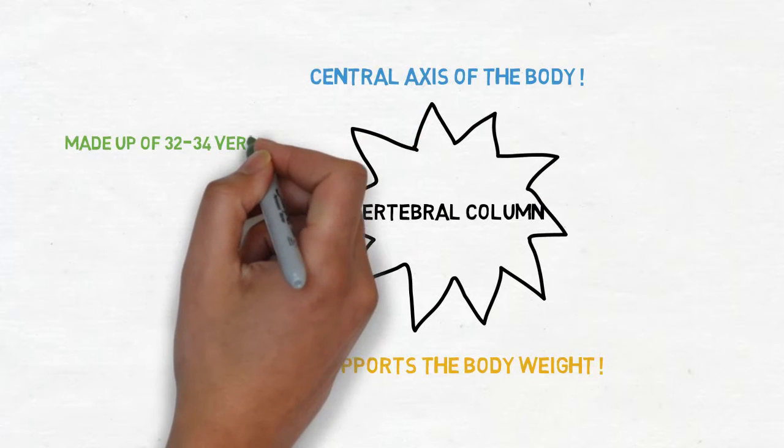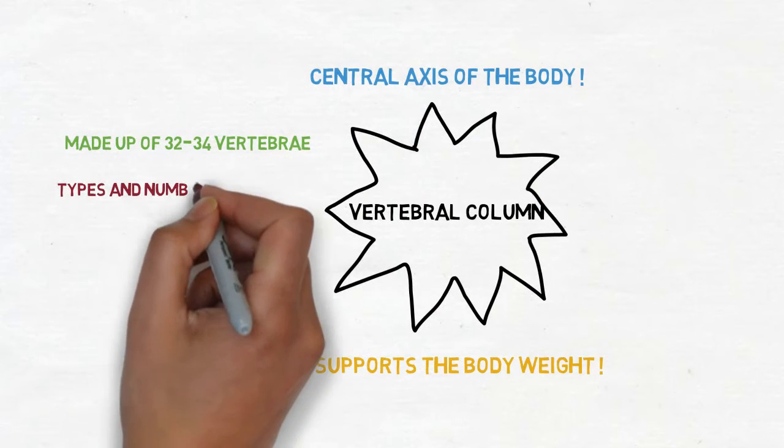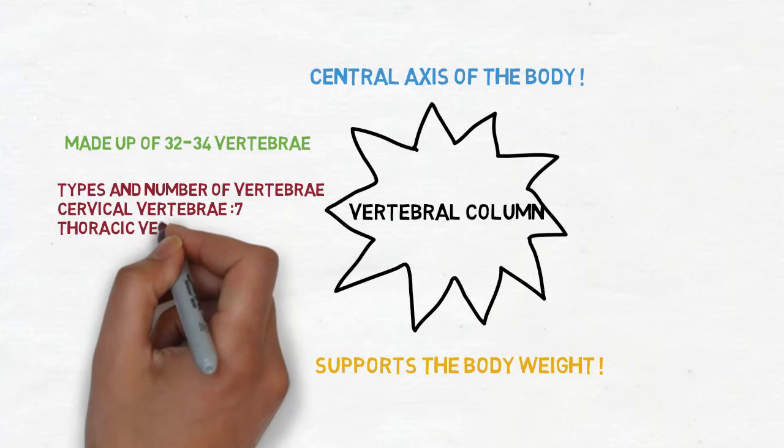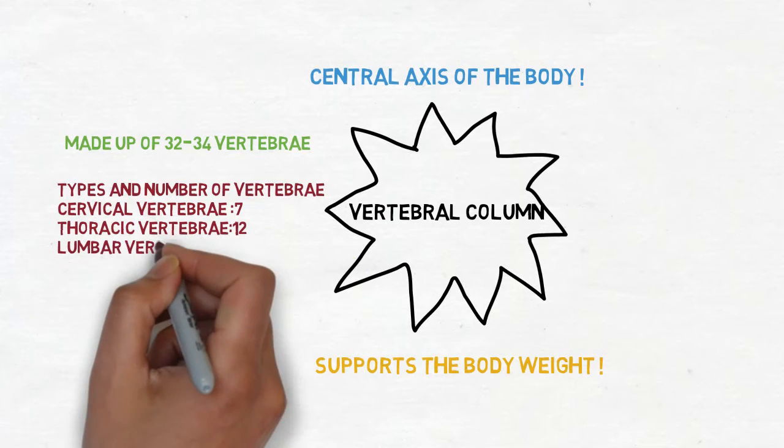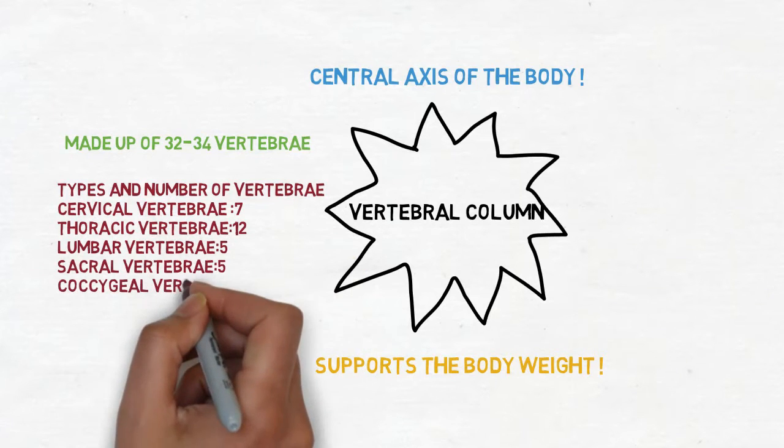The vertebral column is made up of 32 to 34 vertebrae. The types and the number of vertebrae in the vertebral column are cervical vertebrae 7, thoracic vertebrae 12, lumbar vertebrae 5, sacral vertebrae 5 and coccygeal vertebrae 3 to 5.